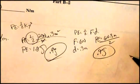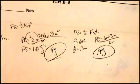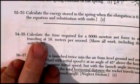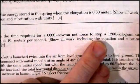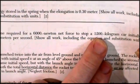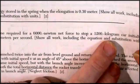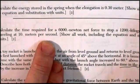All right, I'm going to leave that mistake in too anyway. Okay, let's go to question 54 and 55. Calculate the time required for a 6,000 Newton net force to stop a 1,200 kilogram car initially traveling at 10 meters per second. Show all work.